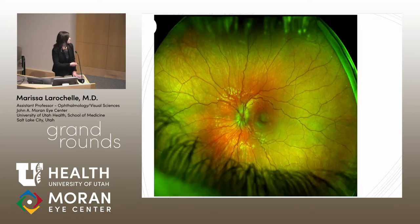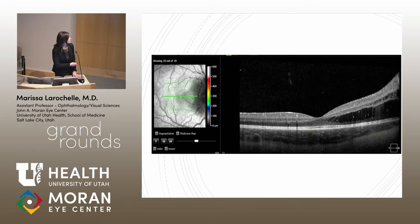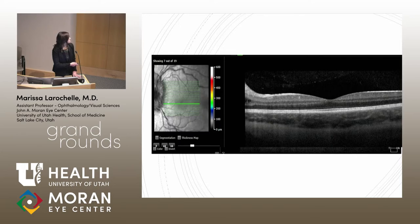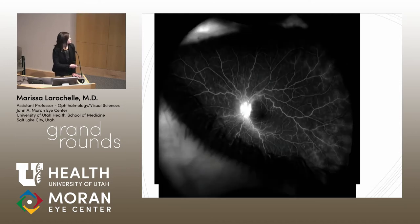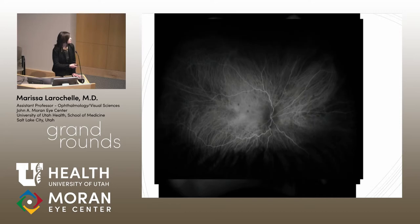The left eye shows optic nerve swelling, with the macula showing swelling of the optic nerve and fluid extending into the macula. Fluorescein angiography shows a hot nerve and peripheral fern-like retinovascular leakage in the right eye, similar in the left. ICG shows hypofluorescent spots in the macula corresponding to the lesions seen on exam.